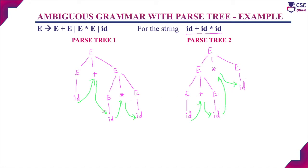If you check here, there are two different parse trees for deriving the same string. If a grammar produces two different parse trees for deriving the same string, then that grammar is an ambiguous grammar. So the given grammar is an ambiguous grammar.